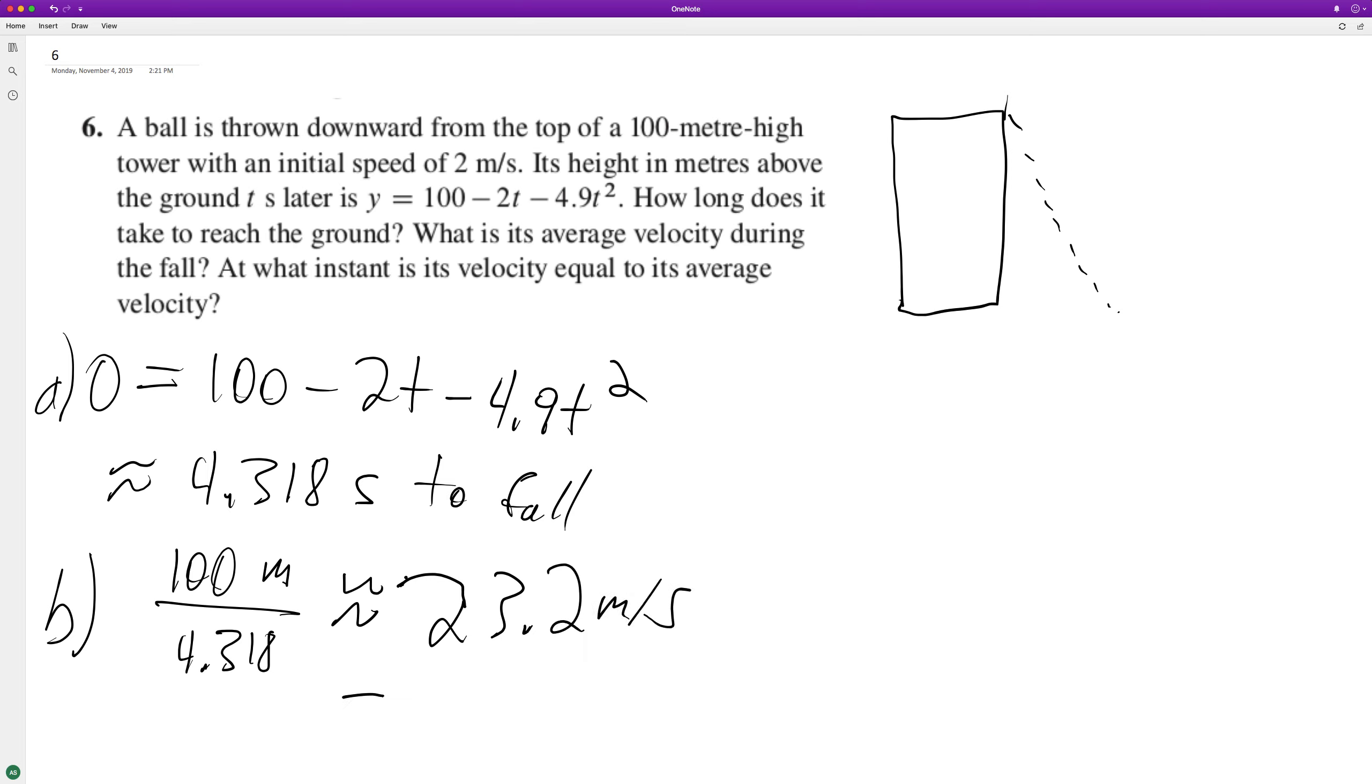At what instant is its velocity equal to the average velocity? To do that, we take 100 - 2t - 4.9t^2 and set it equal to negative 23.2 meters per second, then solve for t. You probably have to use the quadratic equation again, and we end up with approximately 2.16 seconds.